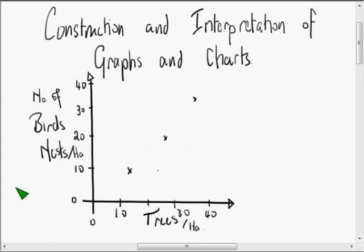So we call the birds' nests the dependent variable. A variable is a number that can change. And the number of trees, which is fixed and we can do nothing about, is the independent variable.